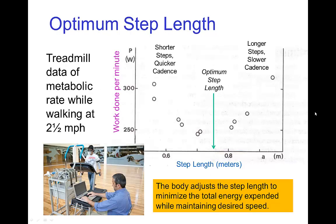You can take measurements by putting people on a treadmill and fixing the speed. If you ask them to take short steps and walk quickly and measure their energy consumption, it turns out that takes more energy. If you have them take long steps with a slow cadence, that also takes more energy. The minimum in energy consumption happens to occur at the step length that the body naturally finds when walking at that speed.